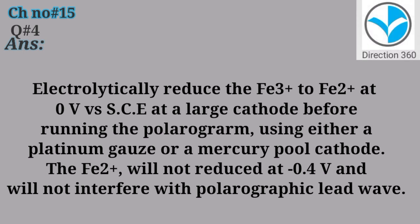Question No. 4: Electrolytically reduce Fe³⁺ to Fe²⁺ at 0V using SCE. Add a large cathode before running the polarogram, using either a platinum gauze or a mercury pool cathode. Fe²⁺ will not reduce at minus 0.4V and will not interfere with the polarographic lead wave.